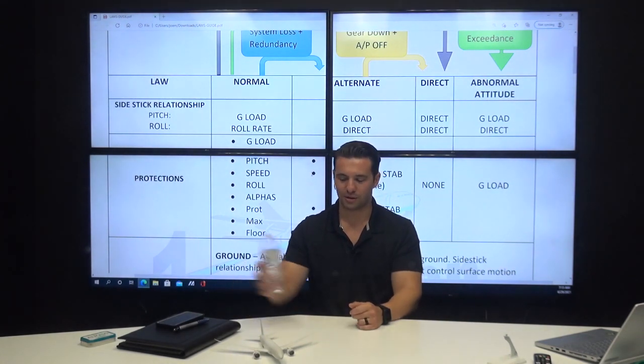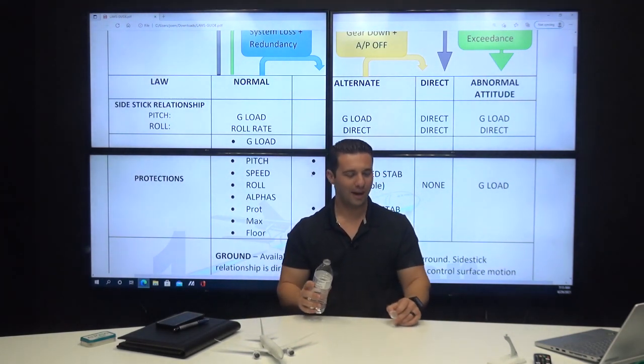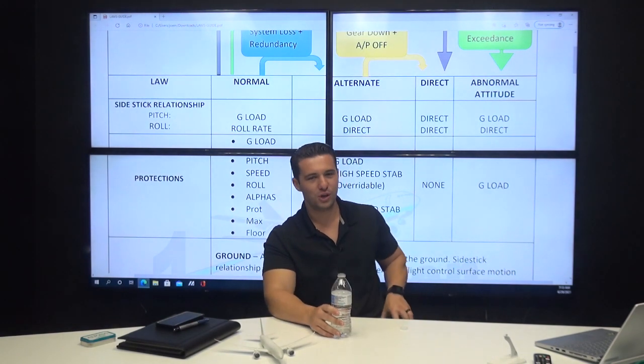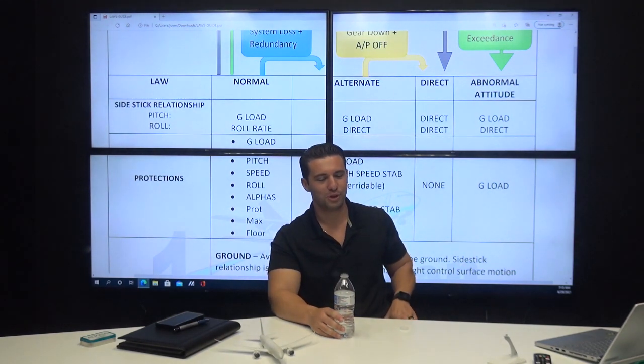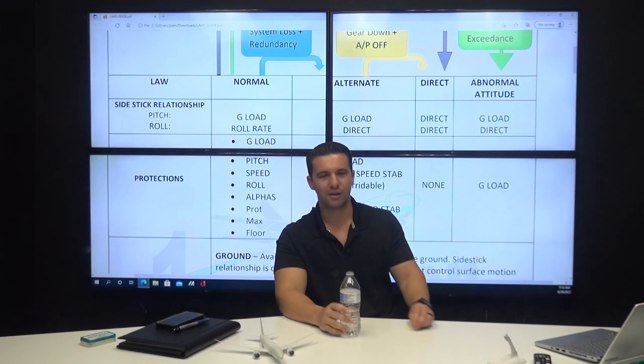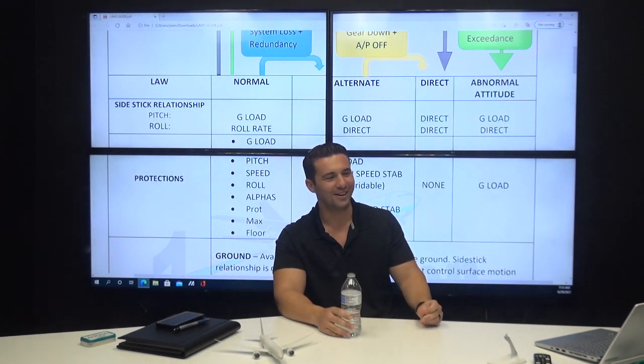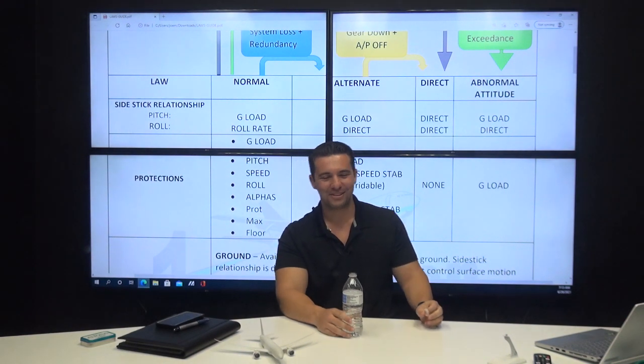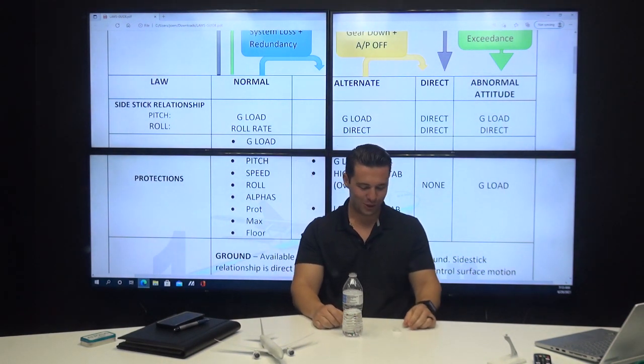So how many auto thrust systems are installed? Two. This is my oral. How many auto thrust systems, Joe, do we have? We have two. Are you sure about that? We only have one push button. Thank you for questioning my answer. I'm sticking with that one. Final answer. I don't need to phone a friend. I don't need to call and, you know, who wants to be a millionaire, right? I'm going to stick with two channels.